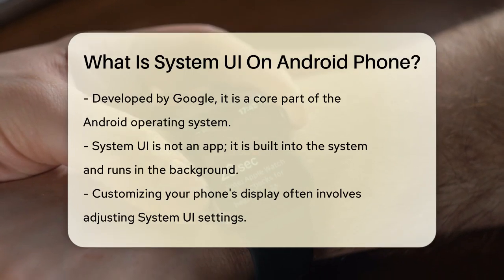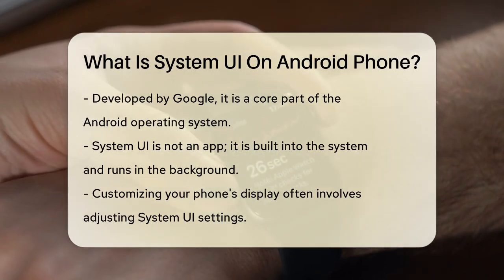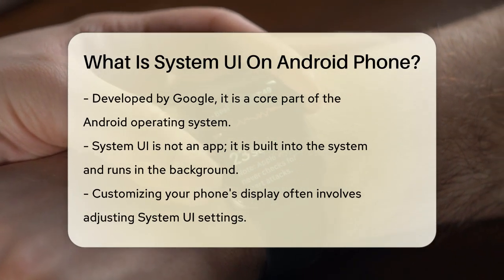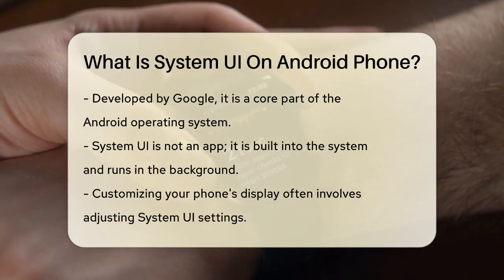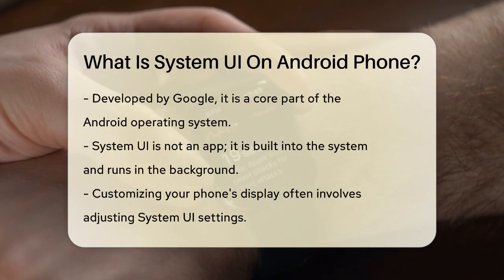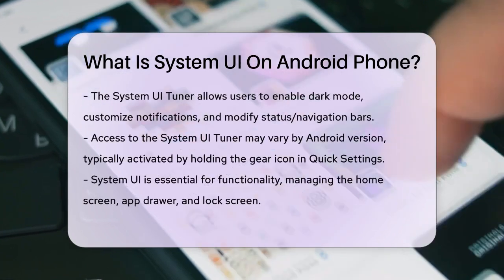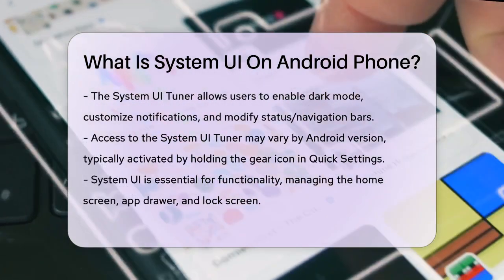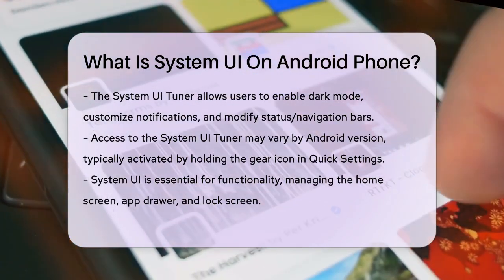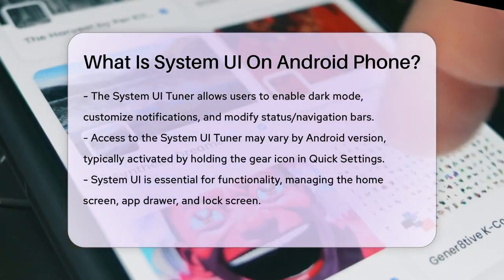When you customize your phone's display, you're often tweaking the System UI. For example, you can use the System UI Tuner to enable dark mode, customize notifications, or adjust the status and navigation bars. This tuner is a hidden feature in some Android versions, but you can access it by pressing and holding the gear icon in the quick settings panel.